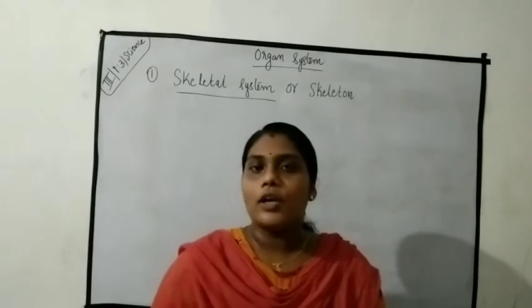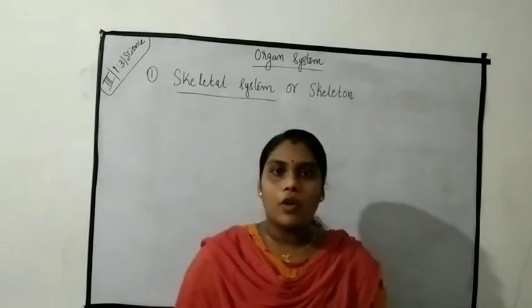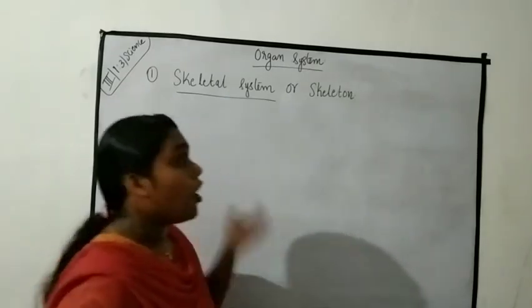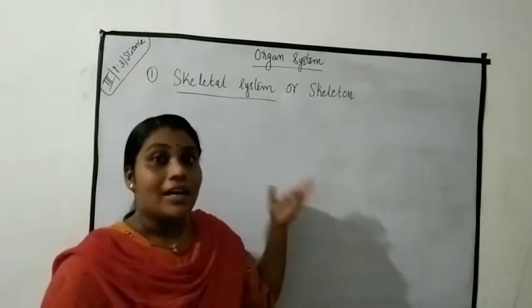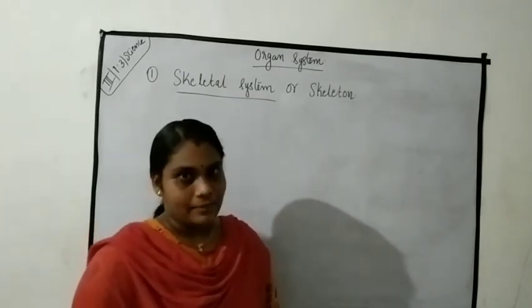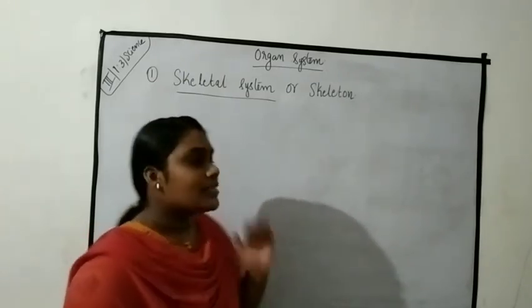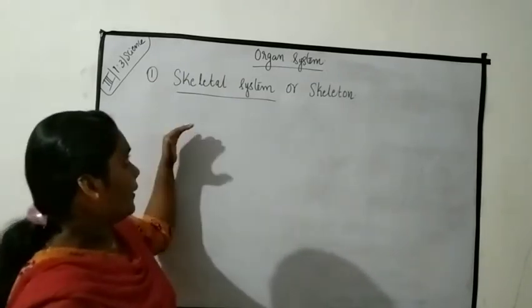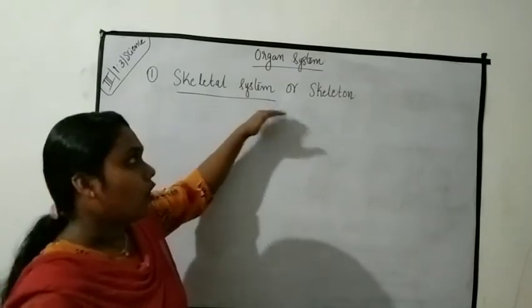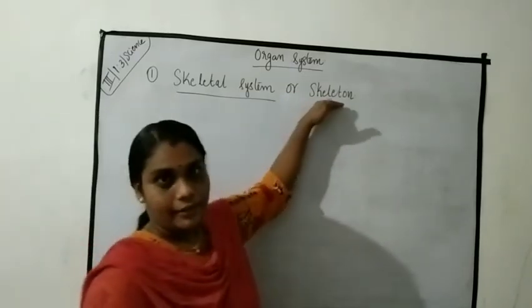Okay students, today we are going to discuss about organ systems. We already know there are eight organ systems. The first one is the skeletal system, or skeleton.